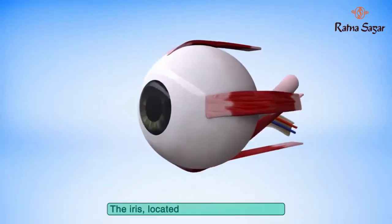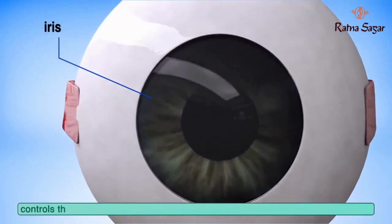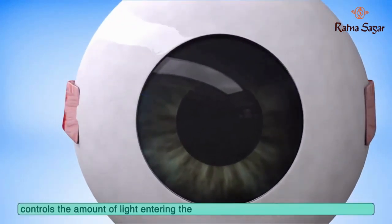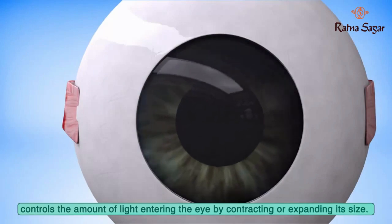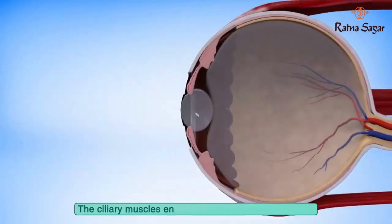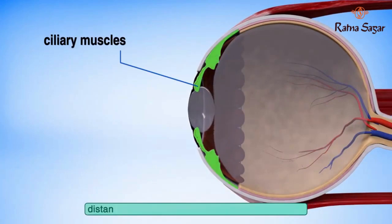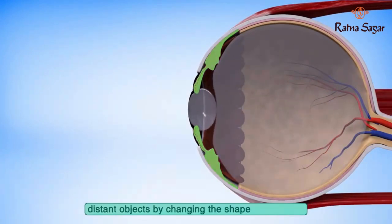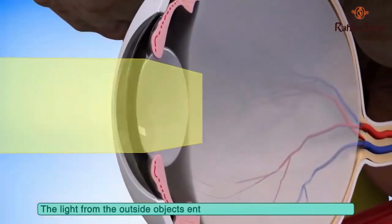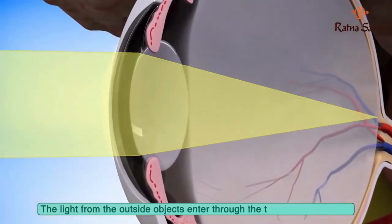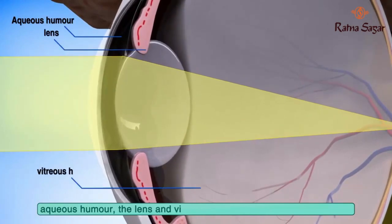The iris, located in the front of the lens, controls the amount of light entering the eye by contracting or expanding its size. The ciliary muscles enable the eye to focus on near or distant objects by changing the shape of the lens. Light from outside objects enters through the transparent cornea, aqueous humor, the lens, and vitreous humor to focus onto the retina.